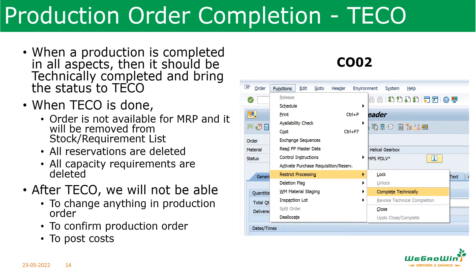Next is production order technical completion, which people commonly call TECO. Whenever a production order is completed in all aspects, we should technically complete the order. The reason is that the completed order should not be available for further MRP runs, should not hold any reservations, and should have no capacity requirements. Technical completion is done through transaction CO02 via Functions > Restrict Processing > Complete Technically. After TECO is done, we cannot change anything in the production order, cannot confirm it, and cannot confirm costs.